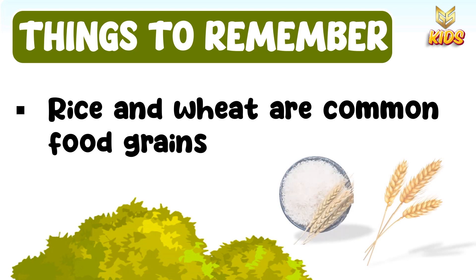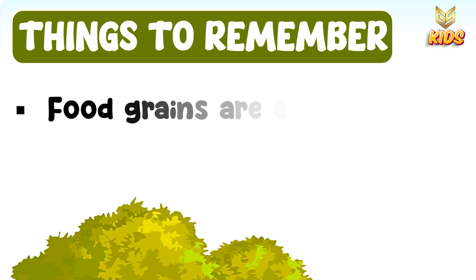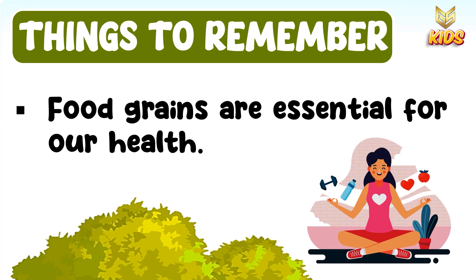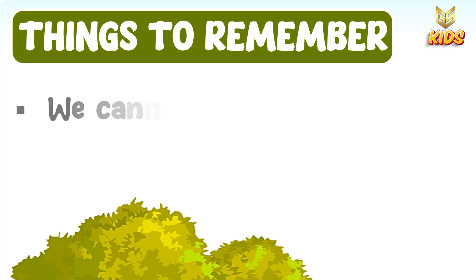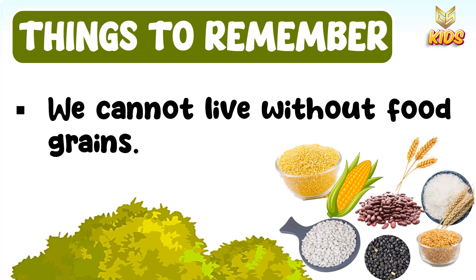Rice and wheat are commonly used food grains because we eat rice and wheat daily. You love eating rice at lunch and dinner. Food grains are very essential for our health — for maintaining good health we need to eat an essential amount of food grains. We cannot live without food grains; without food grains, our food cannot be prepared. So that's why food grain is very important to live.